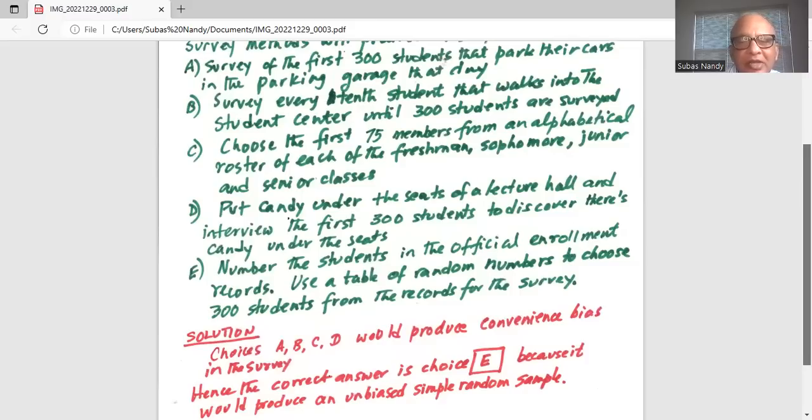So this is the correct answer. Number the students in the official enrollment records. Use a table of random numbers to choose 300 students from the records for the survey.